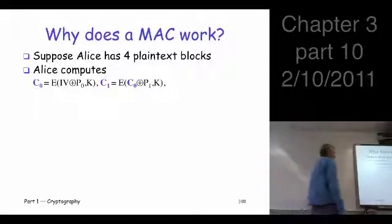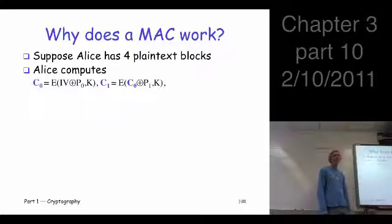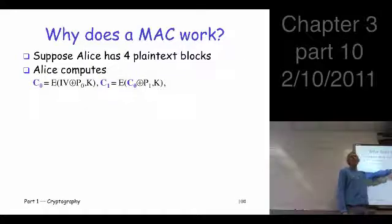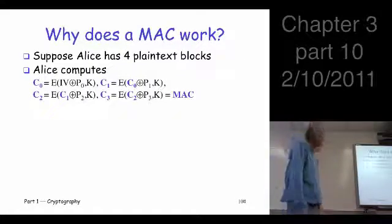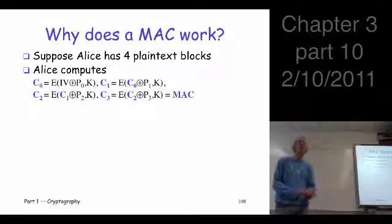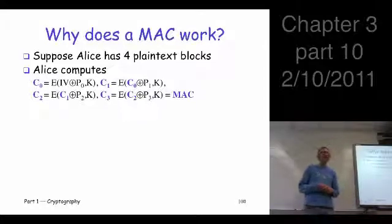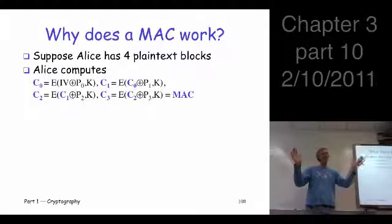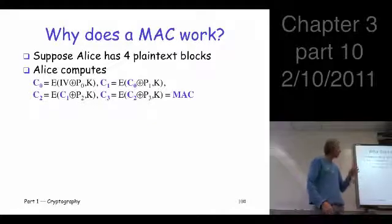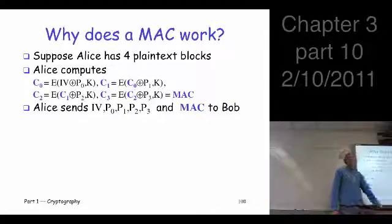What does Alice do? She generates a random IV. Alice and Bob share a key — that's assumed. She starts encrypting using CBC mode, computing each block in sequence. Whatever the last block comes out to be, she calls that the MAC. What is she going to send to Bob? She sends the IV — Bob has to know the IV — the plaintext, and the MAC. So Alice sends IV, P0, P1, P2, P3, and the MAC to Bob.